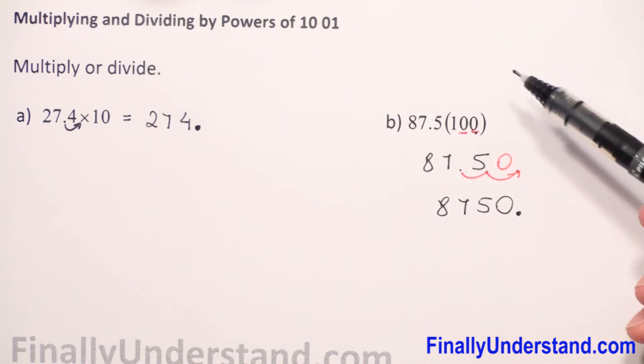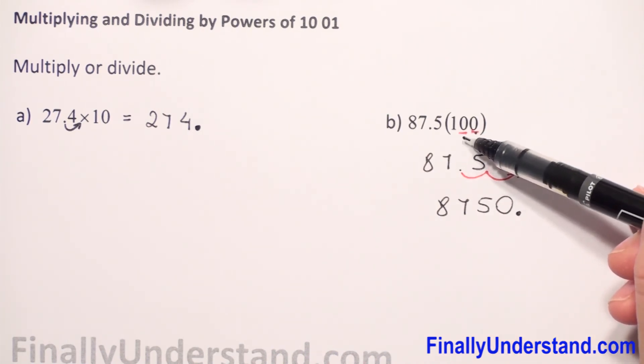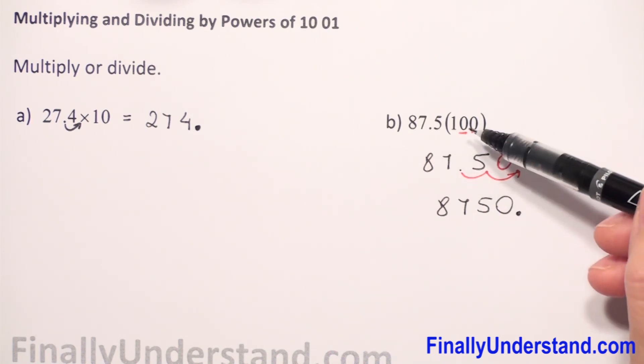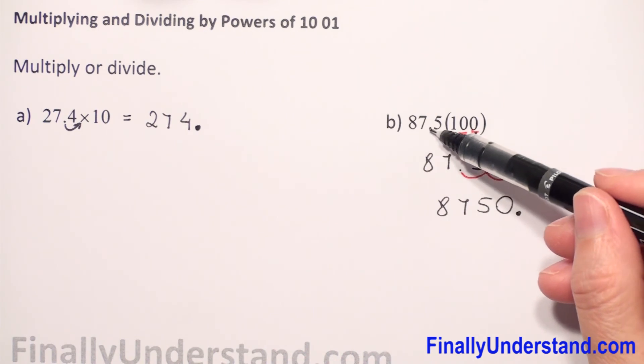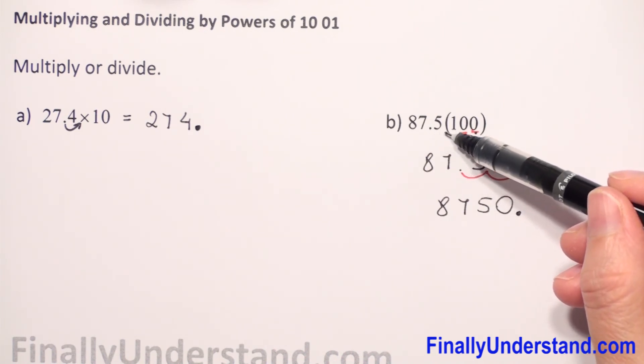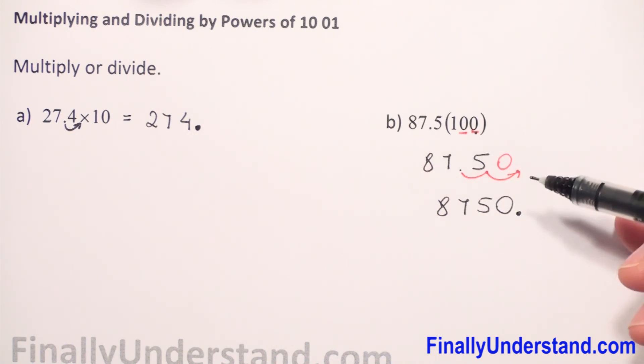One more time: when we multiply by powers of 10 a decimal number, we check how many zeros we have. Two zeros means we have to move the decimal point two places to the right, always to the right when we have multiplication. This is my solution.